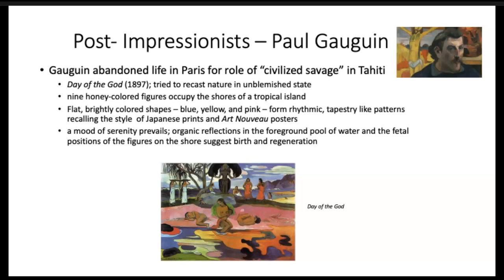Day of the God in 1897 shows some of those images from Tahiti. In that painting, he tried to recast nature in an unblemished state. There are nine honey-colored figures that accompany the shores of the tropical island. You see flat, brightly colored shapes — blue, yellow, and pink form a rhythmic tapestry-like pattern recalling the style of Japanese prints and Art Nouveau posters. There's a mood of serenity that seems to prevail, and the organic reflections in the foreground pool of water and the fetal positions of the figures on the shore suggest birth and regeneration.